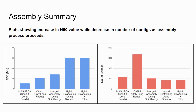To summarize, as we progressively refined our assembly, the N50 value continued to increase while the number of contigs continued to decrease, indicating an increasingly contiguous assembly.